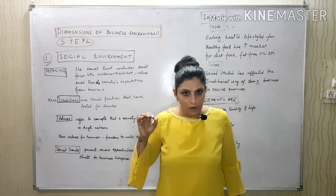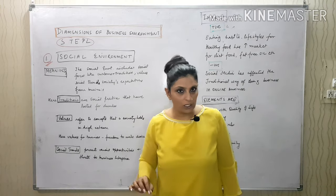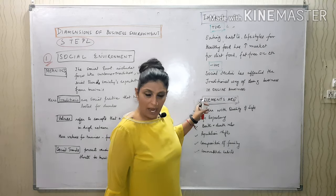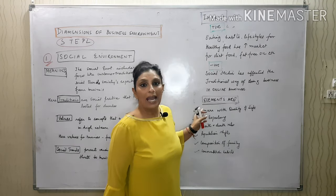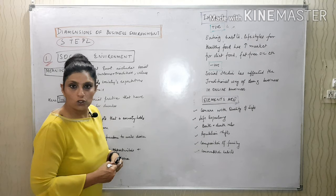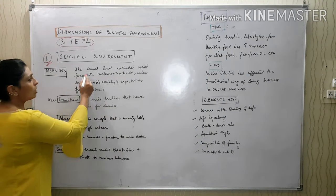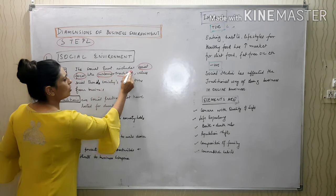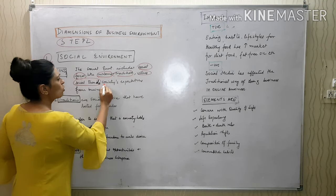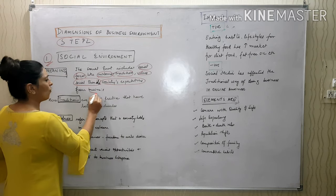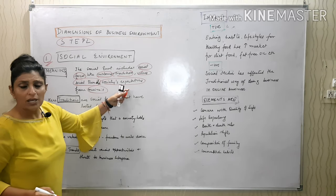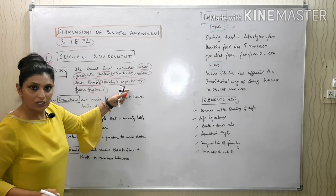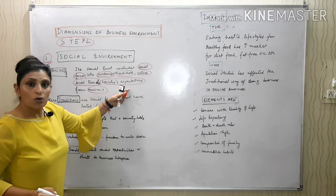For every dimension I am going to explain: meaning, content, then positive and negative impact, and last will be elements. Starting with the meaning of social environment: the social environment includes social forces like customs and traditions, values, social trends, and society's expectations from business. Society expects business to adhere to social responsibility, to give value for customers and all stakeholders.